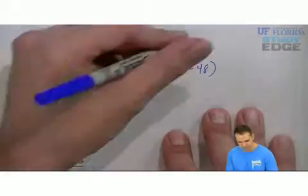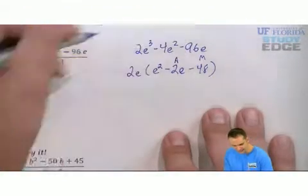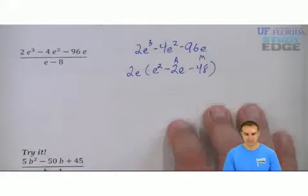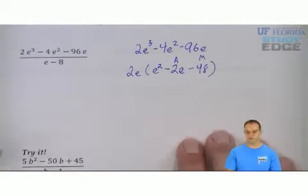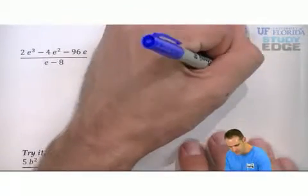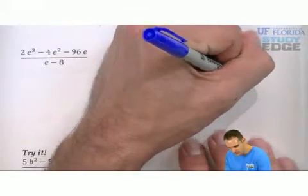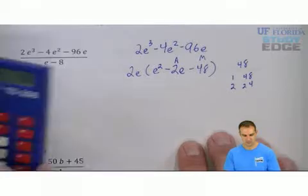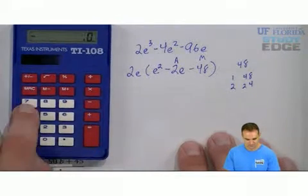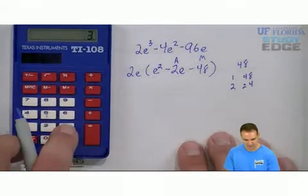Then you ask yourself, what multiplies to negative 48 and adds to negative 2? Because I have a trinomial. You have to write all your factors of 48 off to the side if you need to. 1 and 48, 2 and 24. Let's see. 48 divided by 3.